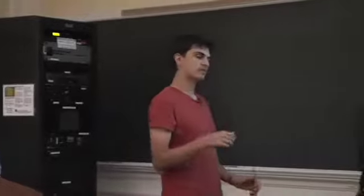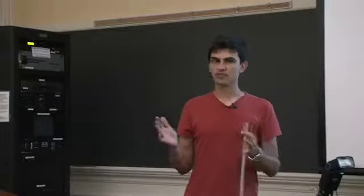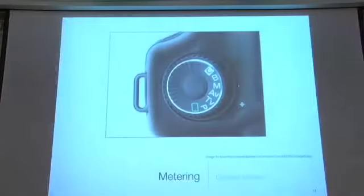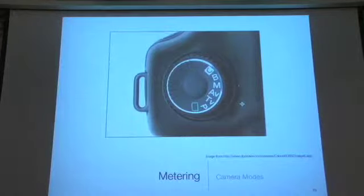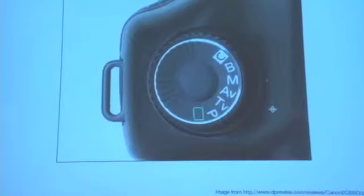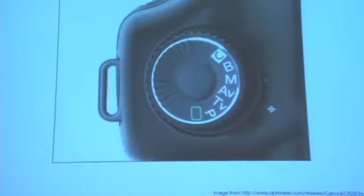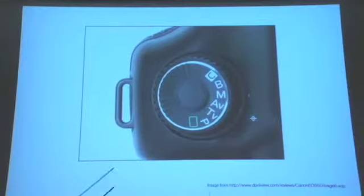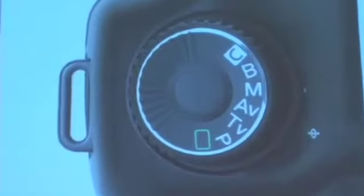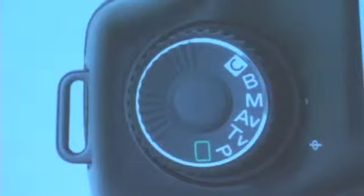Now that you're getting a grasp of these things, hopefully you can stop relying on these modes quite so much. In fact, as cameras get more expensive, you'll notice that they actually have fewer metering modes. This is the metering dial from a now-ancient Canon 5D — they don't have any of those other modes. They don't have portrait mode, landscape mode, etc. They assume that the person purchasing this camera knows how to use the more manual modes to take a photo with the particular effects they want.